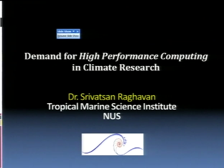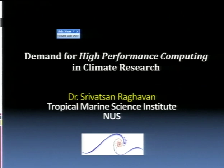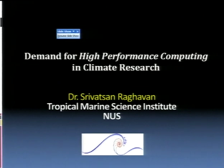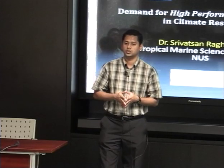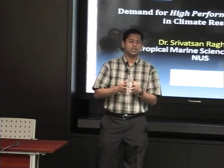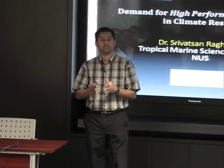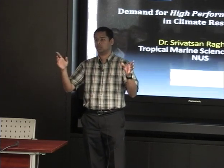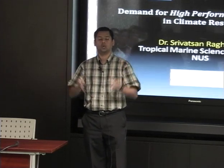So we have what's called global climate modeling. The global climate models are coarse models. What we do is divide the entire globe, the Earth, into grid boxes of relatively coarse resolution — it can be about 250 to 500 kilometers. One grid box can be that large.